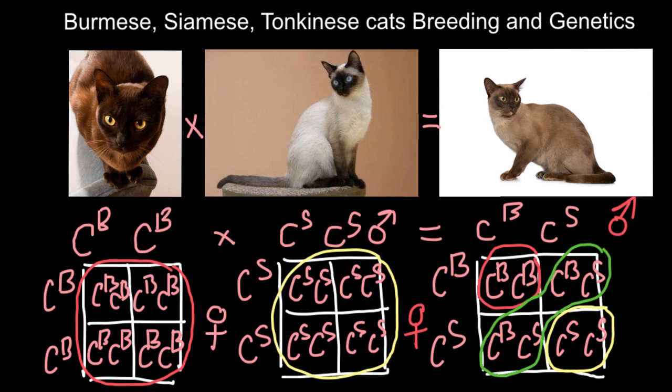A couple more notes about color of the eyes. In Burmese, usually it is yellow. In Siamese, always blue. And in Tonkinese, there can be variation, different colors of the eyes.